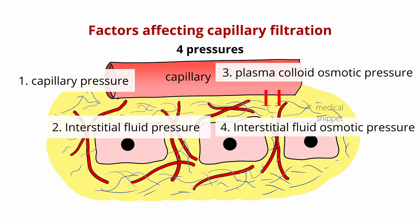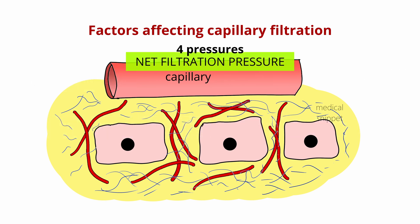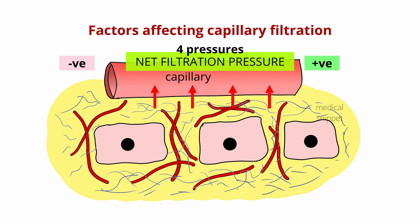When all these forces are summed up, it is called the net filtration pressure. If the net filtration pressure is positive, then fluid flows across the capillaries into the interstitium. If the net filtration pressure is negative, the interstitial fluid is absorbed into the capillaries. In normal conditions, the net filtration pressure is slightly positive, so that fluid flows across the capillaries into the interstitium.